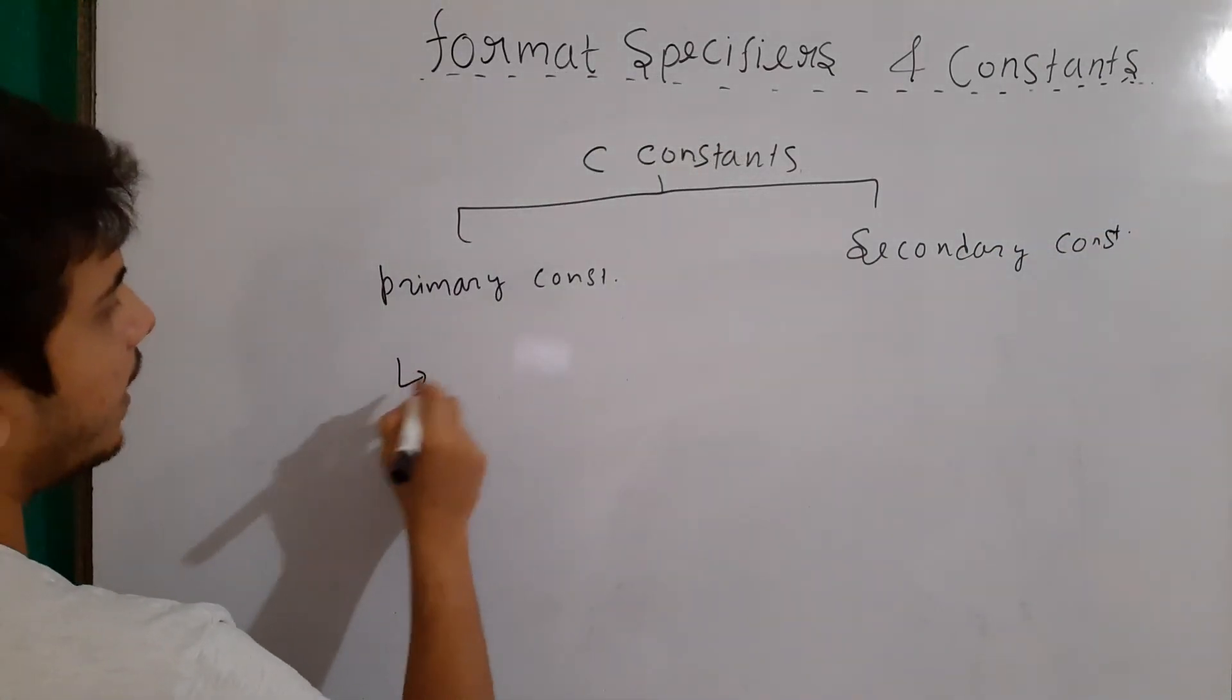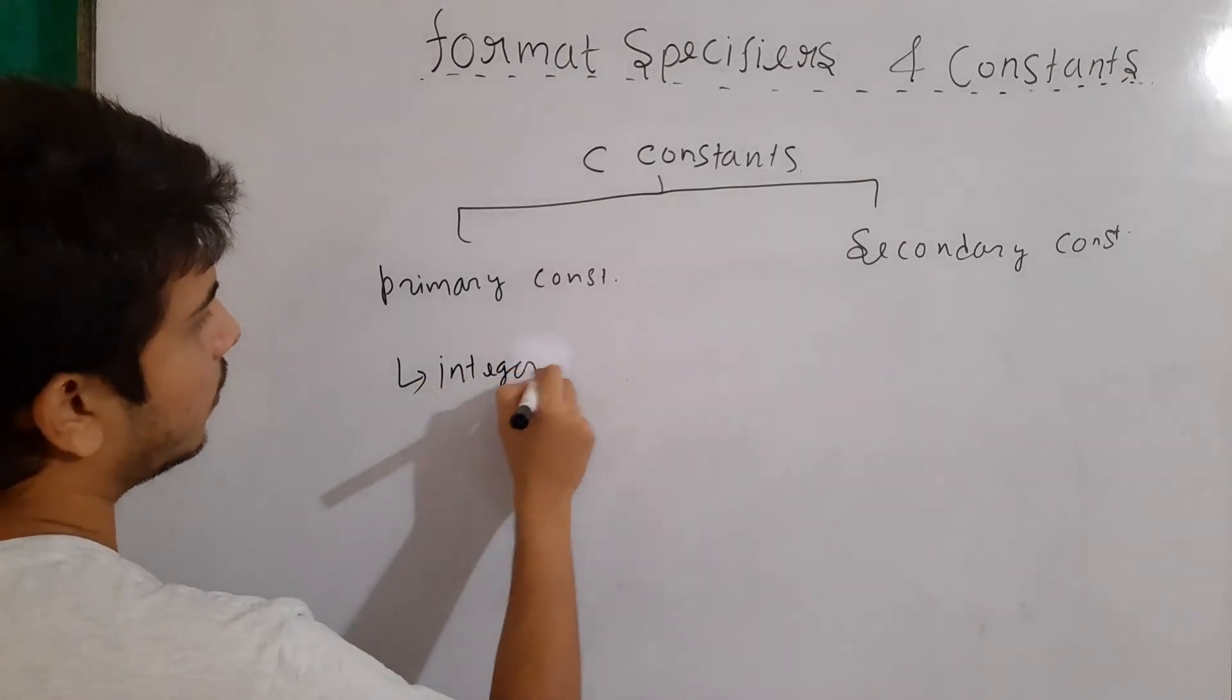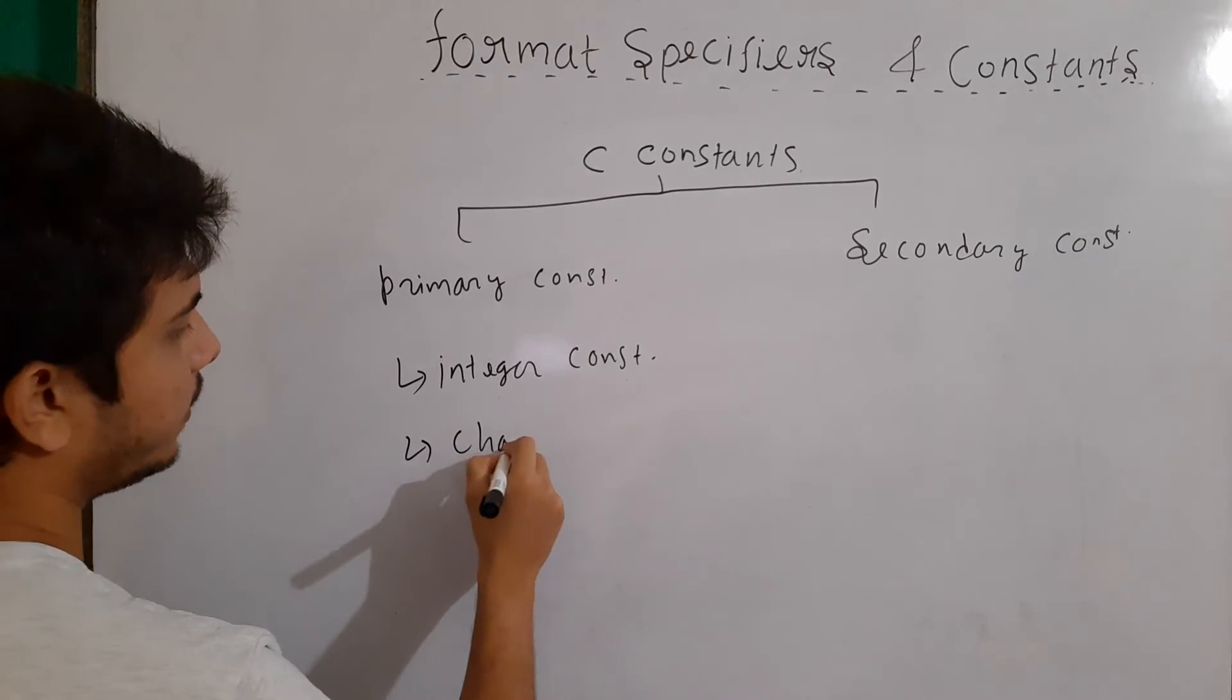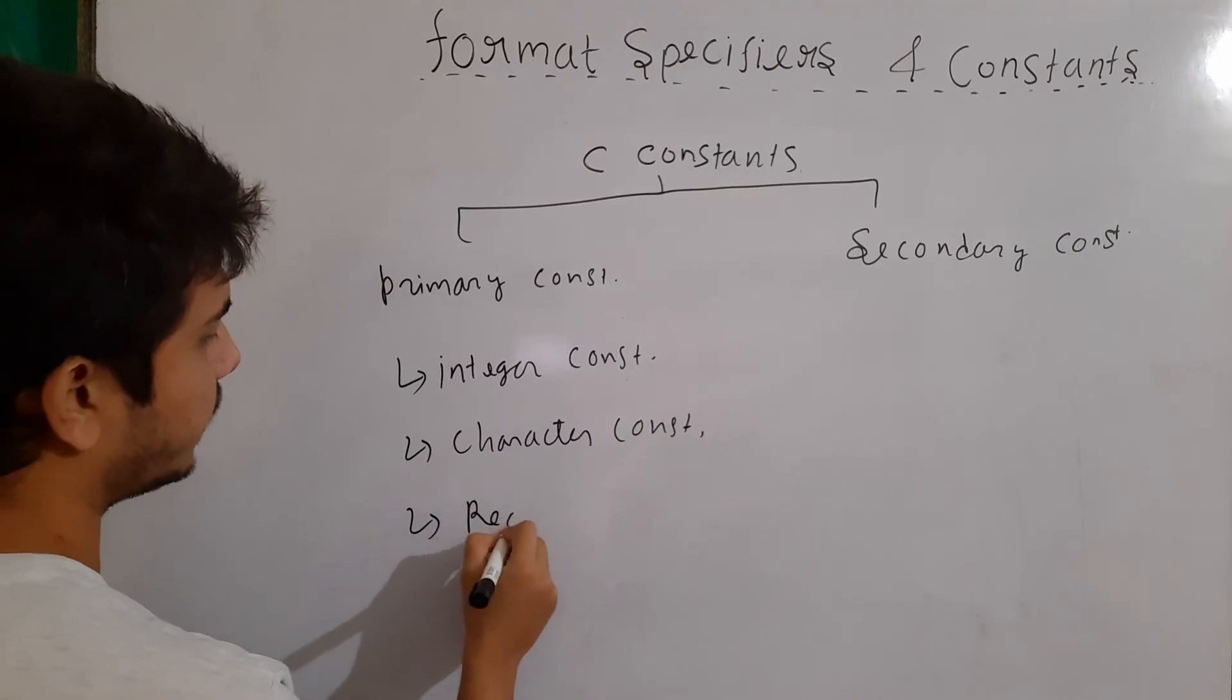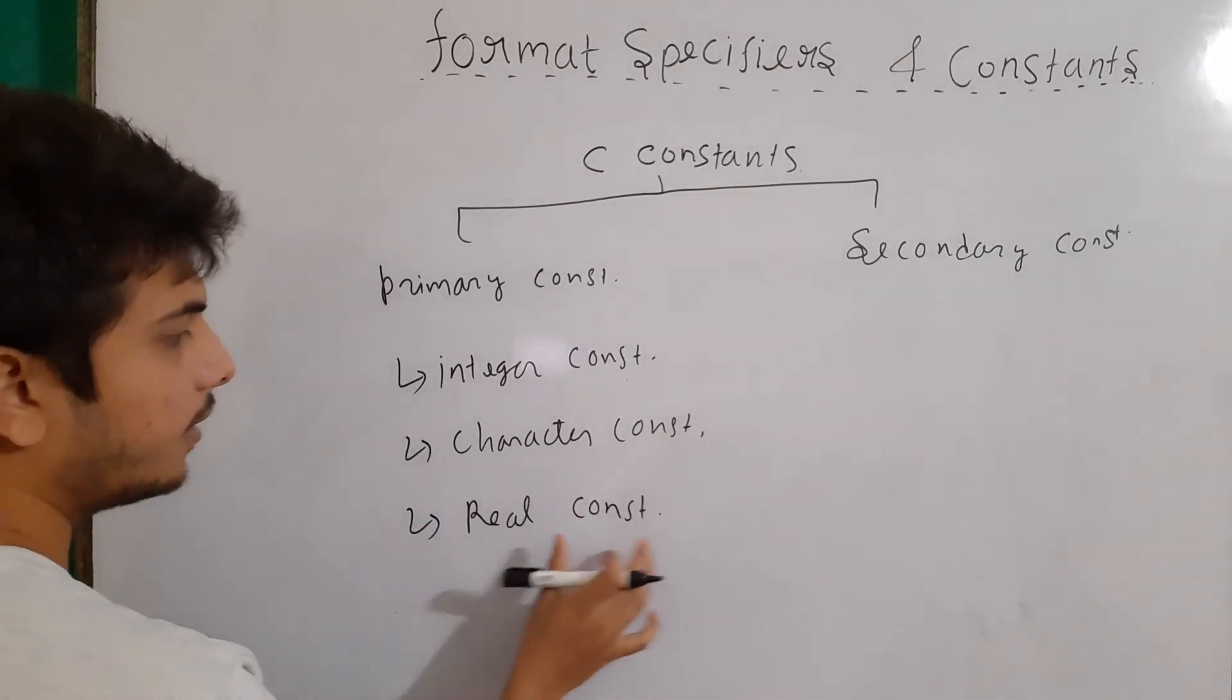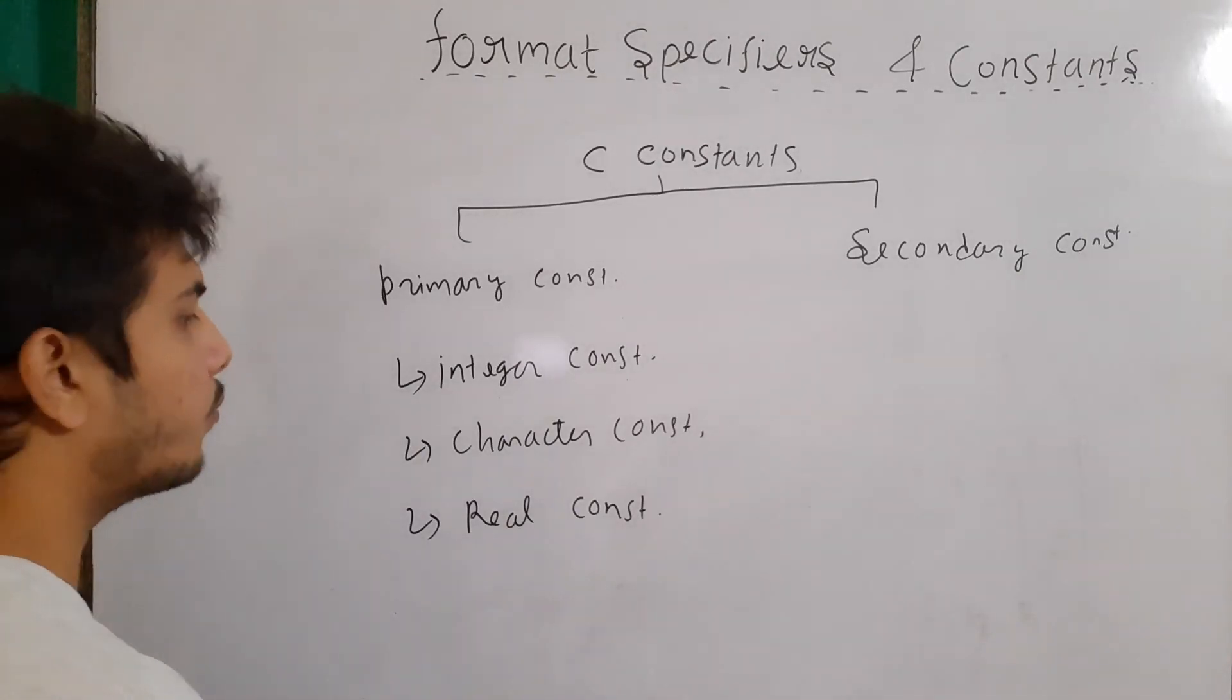In primary constant, we have the integer constant, then character constant. And then we have the real constant. Basically real constants are the float values, the values which have some decimal points.